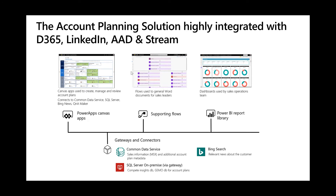Here's a high-level overview of the solution. We use all three legs of the stool of the Power Platform. We use Canvas apps to build, manage, and review plans. We use Power Automate to take plans out of a database and into a document that folks can view offline. We use Power BI to expose insights on top of all that newly digitized account planning information and to help drive action. And because our data is everywhere at Microsoft, we use a variety of connectors — especially the Common Data Service Connector and the SQL Server Connector — to tap into other CRM platforms and line-of-business systems to capture and expose that data.